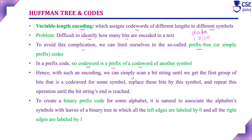In prefix-code encoding, we can simply scan a bit string until we find the first group of bits that is a codeword for some symbol, then replace those bits with that symbol. Repeating this process gives us the decoded data. To create a binary prefix code for an alphabet, we can use the symbols as leaves of a binary tree in which all left edges are labeled 0 and all right edges are labeled 1. In all cases, the left edge is labeled 0 and the right edge is labeled 1. This is a binary prefix code.